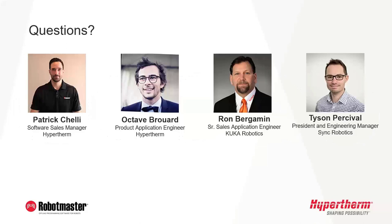Thank you so much, guys, for a great presentation. We've had several audience questions come in, so I'm just going to start and we'll try to get to as many questions as we can. Our first question is for Ron. Ron, what is the most common issue companies have when trying to automate a manual process? One of the biggest problems I've seen with companies trying to automate is trying to do too much on their own or actually trying to do everything on their own. Certainly I've seen customers successful with doing their own automation, but in general they end up wasting time and money. So the value of the integrator — like Tyson mentioned some of the key points in his presentation — integrators bring a lot of value to the process.